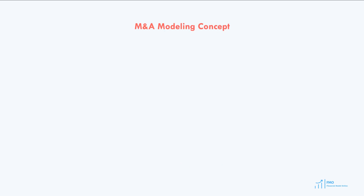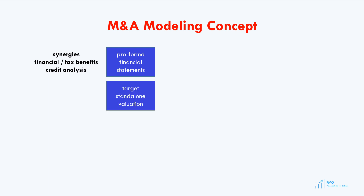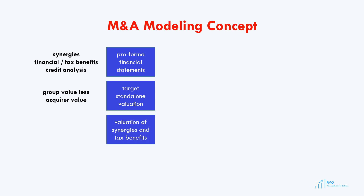The modeling concept used in this course begins with projecting the financial statements of the acquirer and target. Based on those, we create pro forma financial statements of the combined entity. This allows us to calculate synergies, financial and tax benefits, and produce the combined entity's balance sheet for credit analysis. We then value the target on a standalone basis by deducting the target's value from the group value of the combined entity, and separately value the synergies, financial, and tax benefits that drive value creation in M&A transactions.